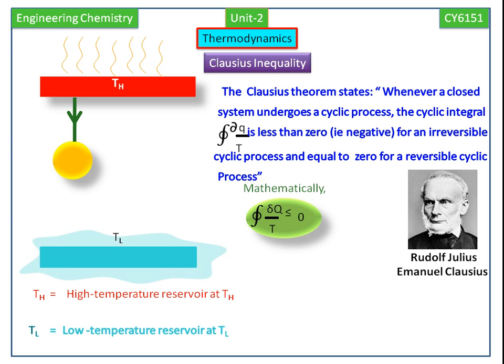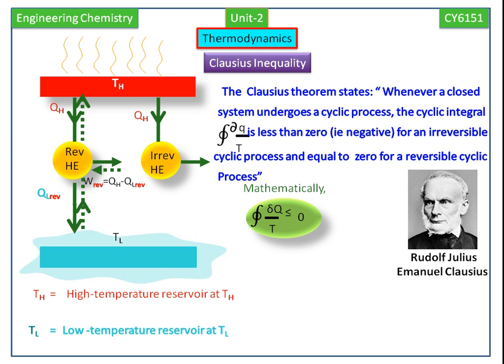Now we are seeing the reversible heat engine. We know that complete conversion of heat into work is impossible, so there is some loss of heat to the surrounding. Work done reversible is equal to QH minus QL reversible. This is the irreversible heat engine. Here, work done irreversible is equal to QH minus QL irreversible.